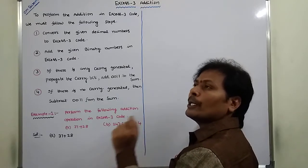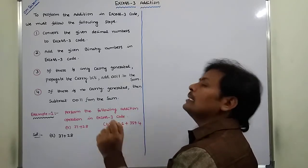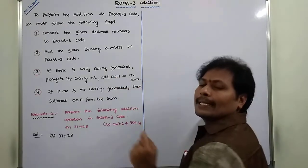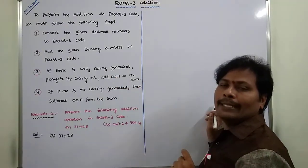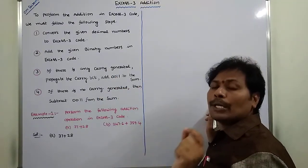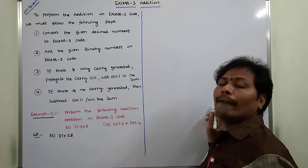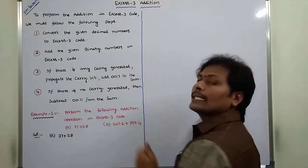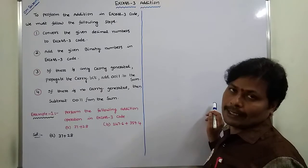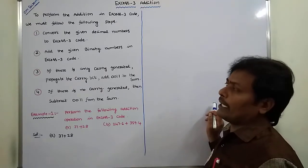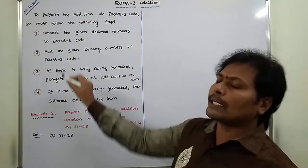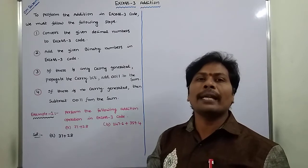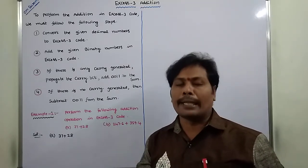If there is no carry generated, then subtract 0011 from the given sum. Here, 0011 is nothing but decimal 3. So these are the steps we have to follow for performing XS3 code addition.